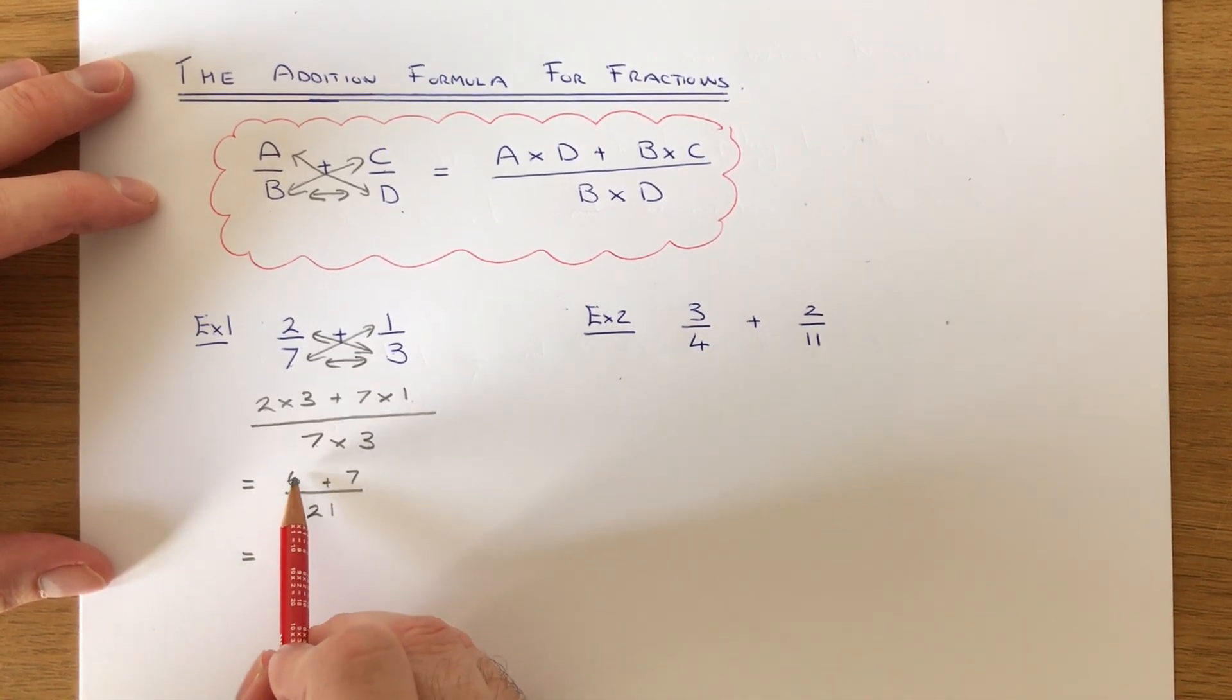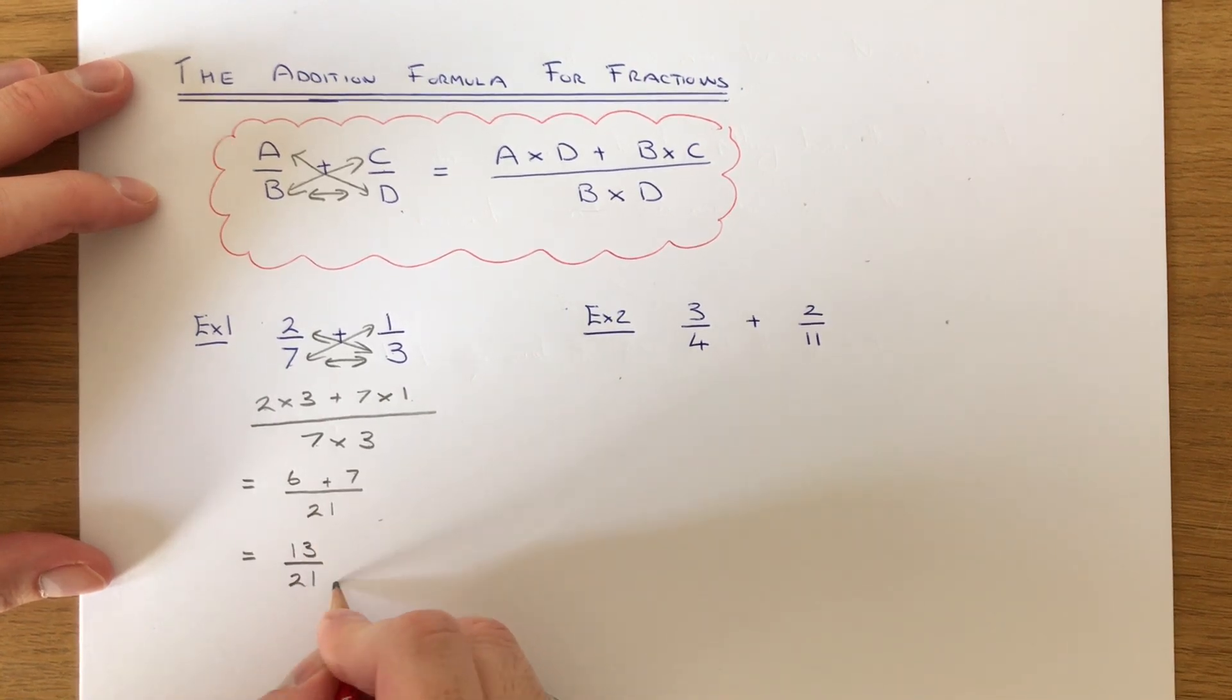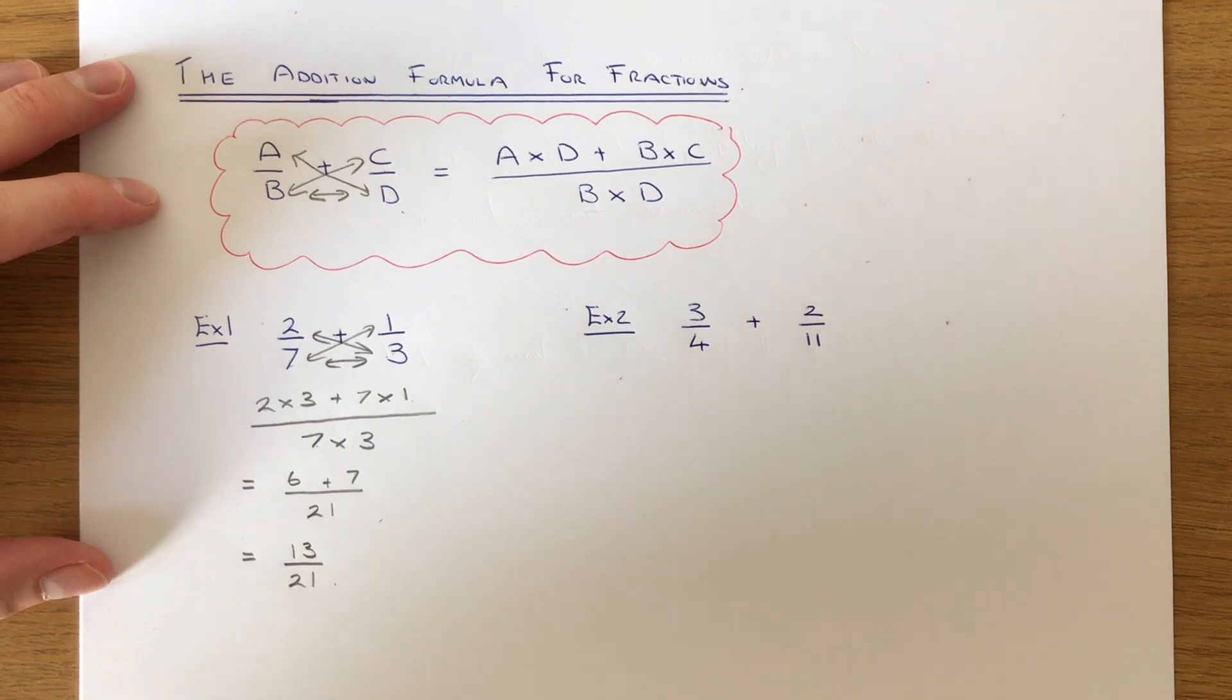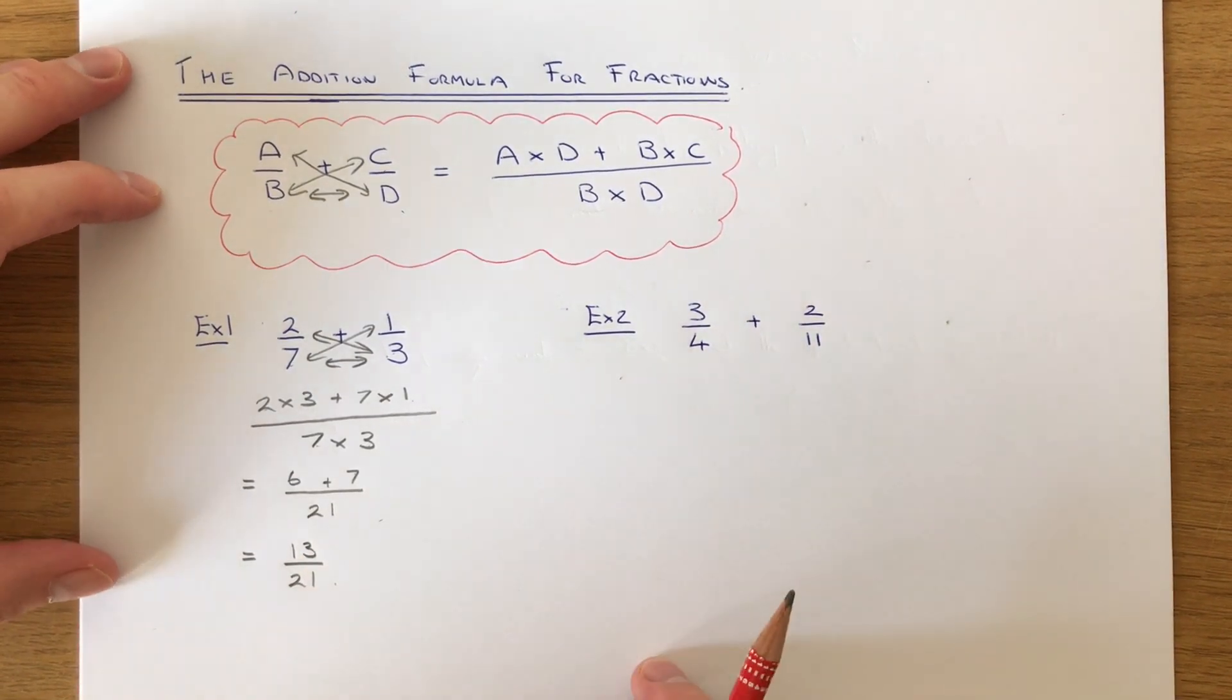We just need to add six and seven together to give us thirteen over twenty-one. Once you've done that, check to see if you can simplify the fraction. In this case, we can't simplify it.